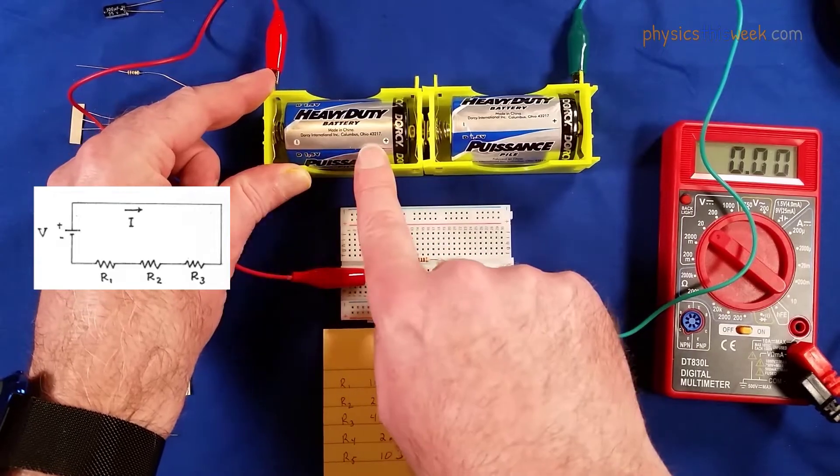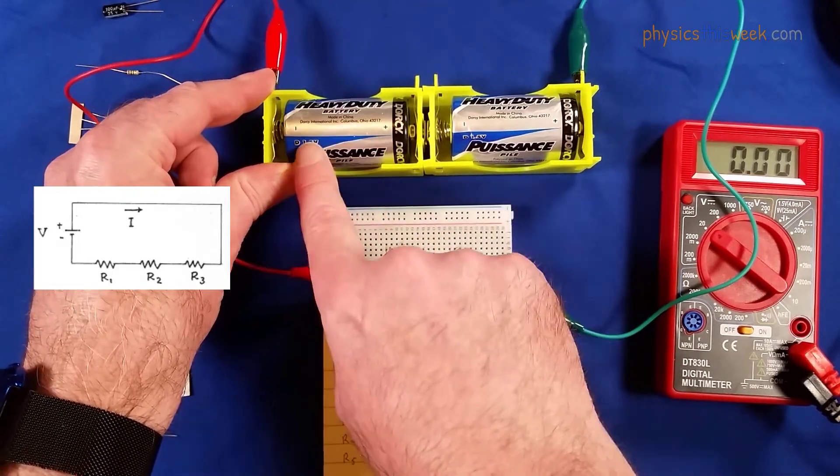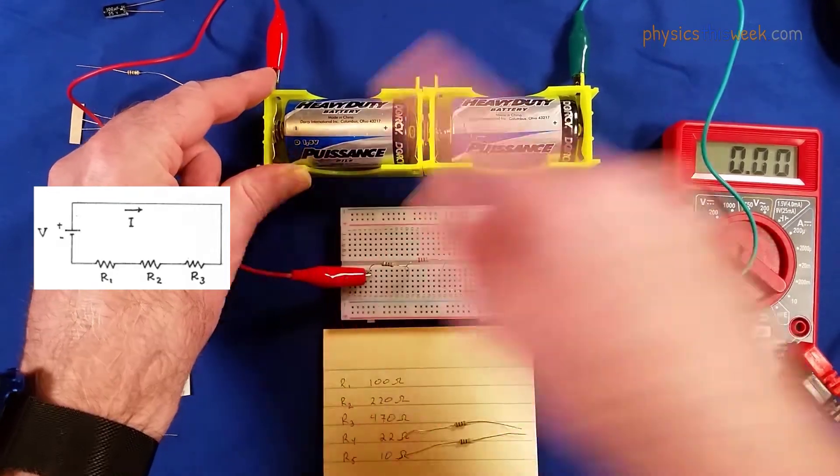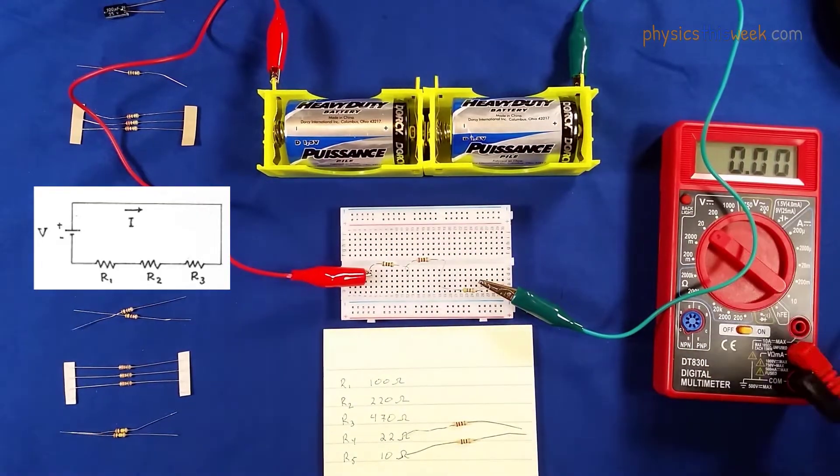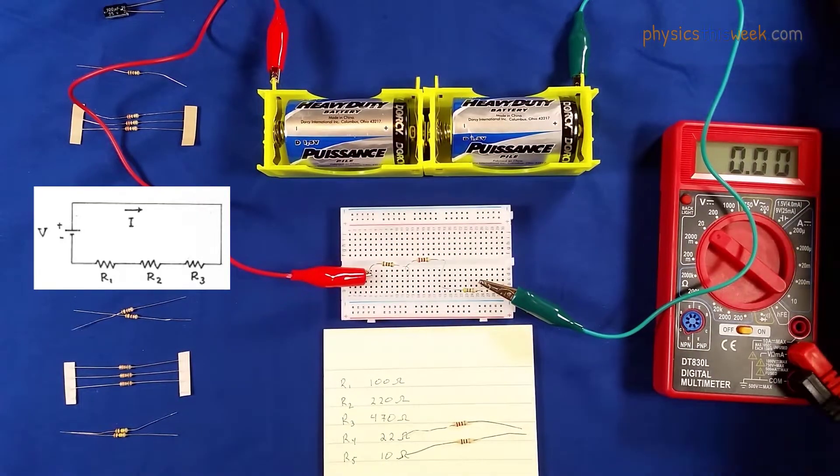There we go, there's the plus and minus on each of these, and then there's the 1.5 volts. Okay, so I'm all hooked up, I'm all ready to go. Now what I'm going to do is measure the voltage across these guys.